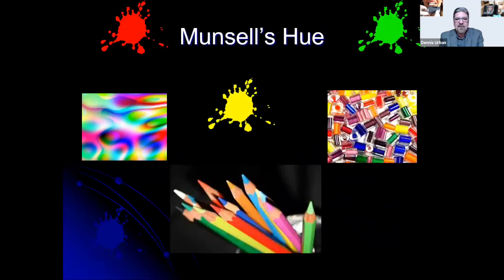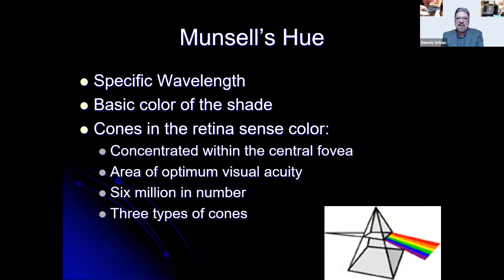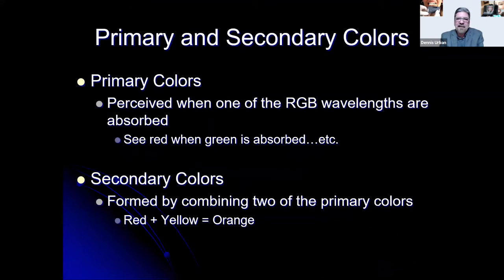Hue is the specific wavelength and basic color of a shade. The cones in the retina sense color, concentrated within the central fovea — an area of optimum visual acuity with six million cones. We have three types of cones. Primary colors are perceived when one of the red, green, and blue wavelengths is absorbed — we see red when green is absorbed. Secondary colors are formed by combining two primary colors: red and yellow equal orange.